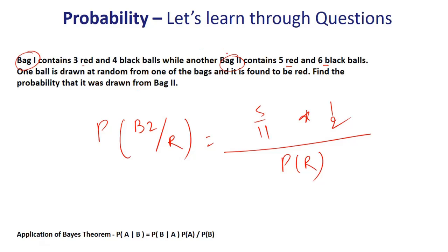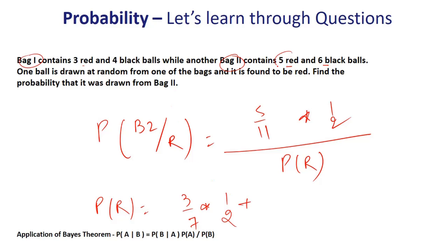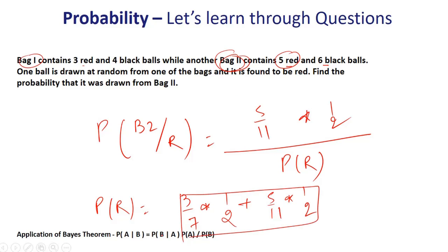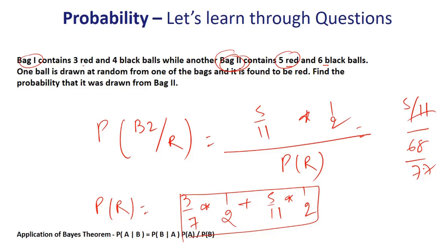What is the total probability of getting a red? You can get red from bag 1 or bag 2. P(red) = P(red | bag 1) × P(bag 1) + P(red | bag 2) × P(bag 2) = (3/7)(1/2) + (5/11)(1/2). Simplifying: 3/7 + 5/11 gives (33 + 35)/77 = 68/77, then divided by 2. Placing values: numerator is (5/11)(1/2) and denominator is 68/77 divided by 2. The answer simplifies to 35/68. A beautiful application of Bayes' theorem.